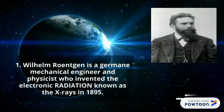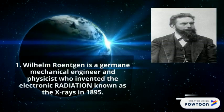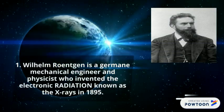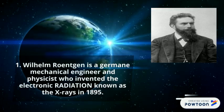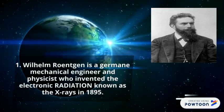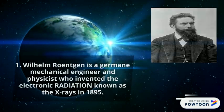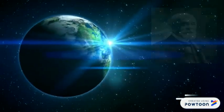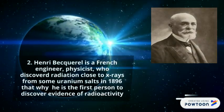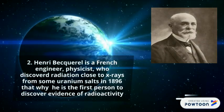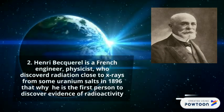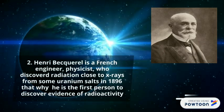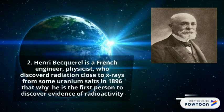Wilhelm Röntgen is a German physicist who invented the electronic radiation known as X-rays in 1895. Then we have the French engineer and physicist Henri Becquerel, who discovered radiation close to X-rays from some uranium salts in 1896. He is the first person to discover evidence of radioactivity.